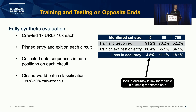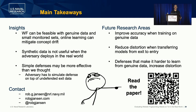We didn't do any optimizations here — we just took the triplet fingerprinting work and applied it directly. Future work includes seeing how accurate this attack can be made if focused on improving accuracy or increasing distortion. Another future area is how we can design defenses in this model so that they work in the real world. One insight is that simple defenses may be more effective than we thought, because the adversary not only has to attack the defended traces — traces that are padded — but also has to simulate the defense on top of data collected at an exit relay, which is an extra step and might be more difficult. That's all — please read the paper for more details.